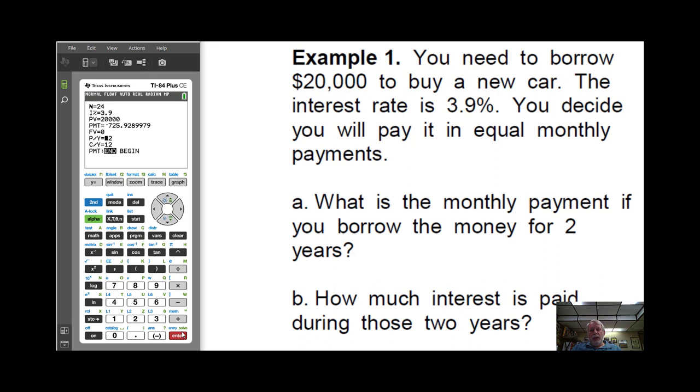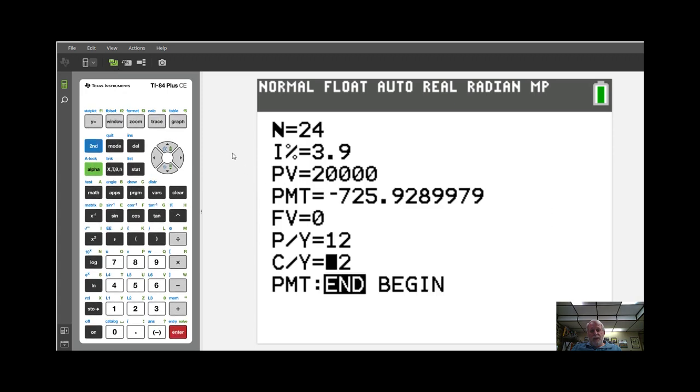PY is payments per year. So it's monthly, so it's 12. And whatever you type in for payments, C, compounding periods per year, it will be the same thing. So these are the values that should be in those places there.